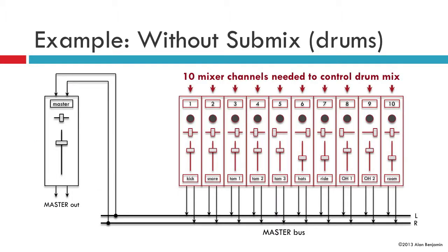Let's take a look at a very common example. Here we have a drum kit that was recorded with ten separate microphones, each recorded on its own track. Say we wanted to put a fade out on this drum kit, we would need to manipulate all ten faders simultaneously to do so, and note that they don't even start at the same location to begin with, so that would be pretty difficult.